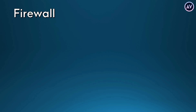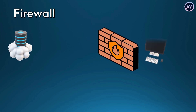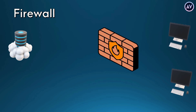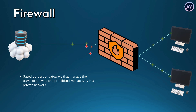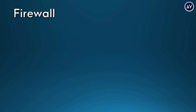So what is a firewall? Firewalls can be viewed as gated borders or gateways that manage the travel of allowed and prohibited web activity in a private network. Hence by comparison, network security firewalls are for web management, typically intended to slow the spread of web threats.